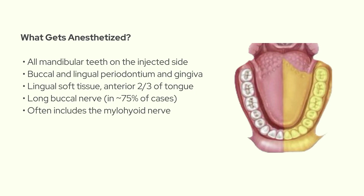People sometimes compare this to the inferior alveolar nerve block, because it's kind of aiming at the same general region. But there are definitely some key differences. One major thing is that the injection is placed way higher, closer to the neck of the condyle, so the anesthetic actually reaches the nerve trunk before it splits. And that's one of the reasons it can be more reliable in some cases.